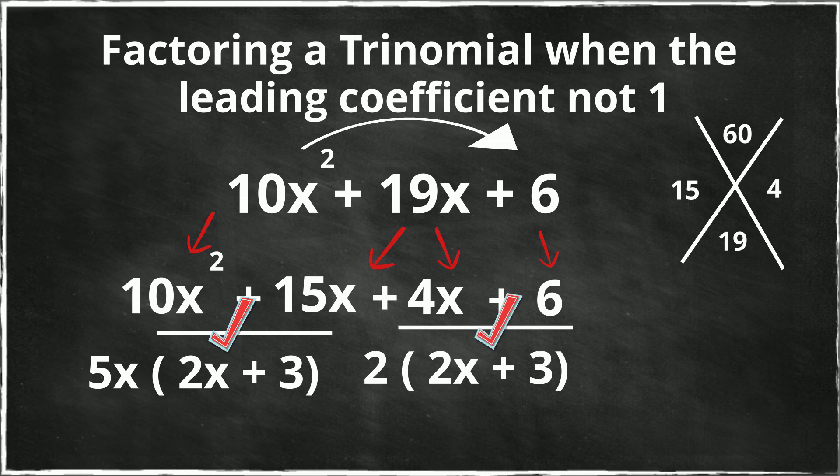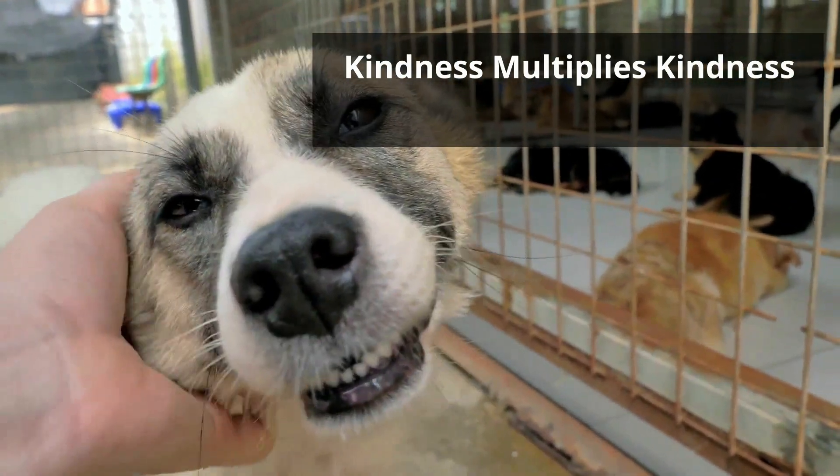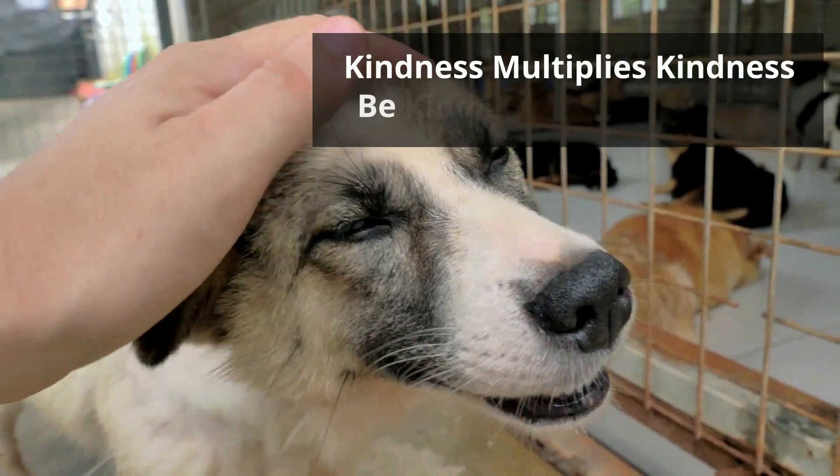So now all I do is write out the factors. So I'm going to do this, but I'm going to take the two numbers right in front of the parentheses. So it's going to be 5x plus 2 and then 2x plus 3. I hope this was helpful. Thanks for watching and remember kindness multiplies kindness. Be kind to someone today.